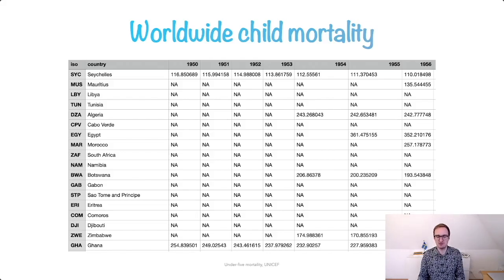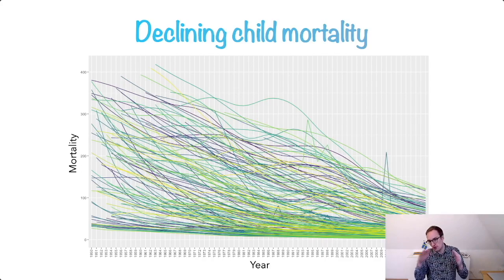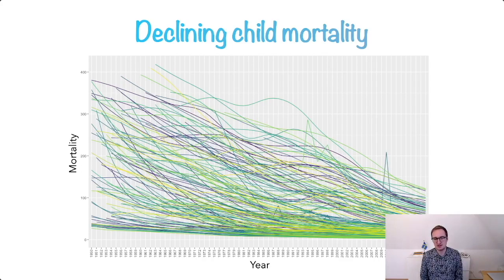If you were to quickly visualize this large table, maybe you'd open up Excel and choose the standard default plot — a line chart. We get something where all the countries are a single line, and we can see that child mortality rates are overall declining from the 1950s up until 2018. There are some spikes in between, but we can't really identify which country they belong to. The color choice has some repeating colors. It looks nice, but it's just telling one story: child mortality rates are going down.